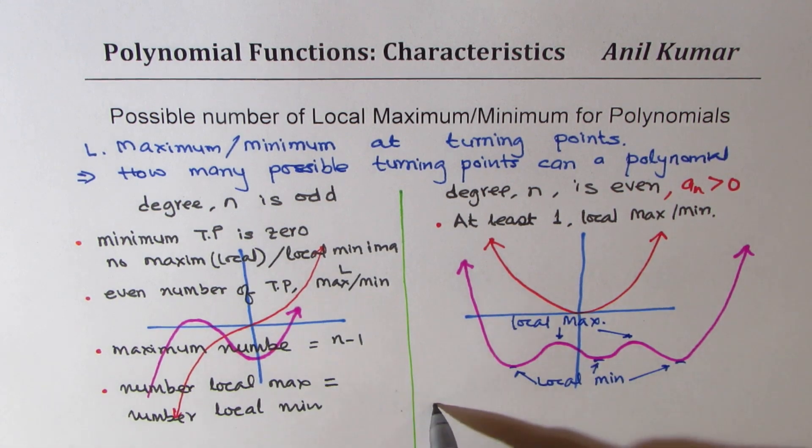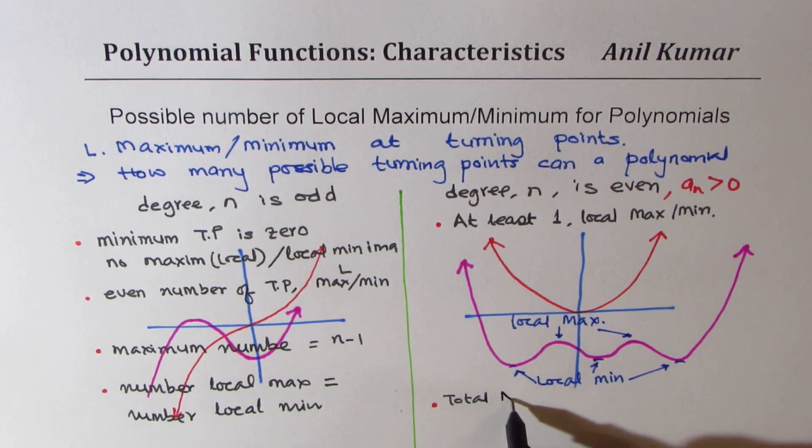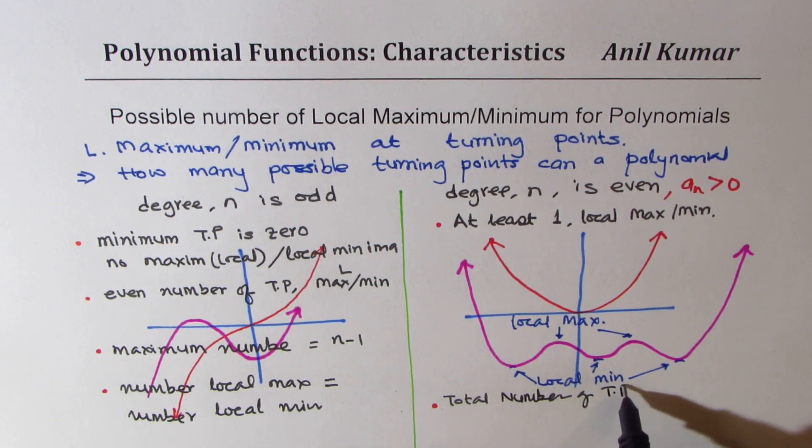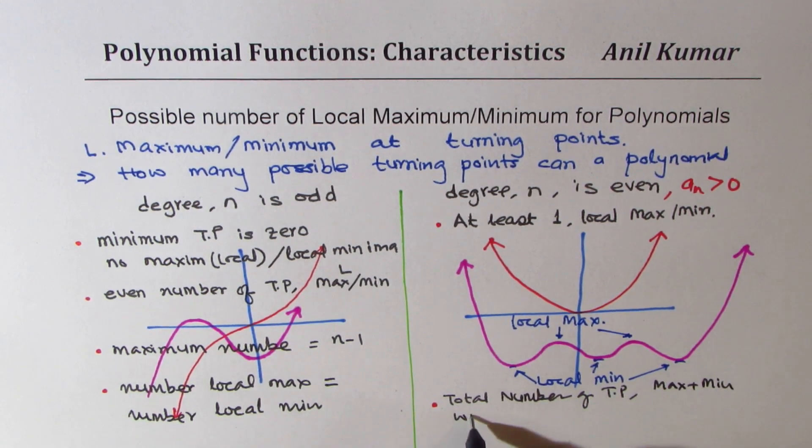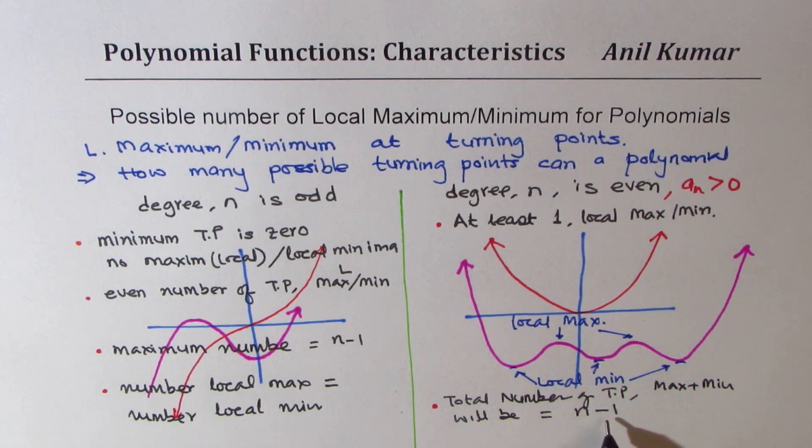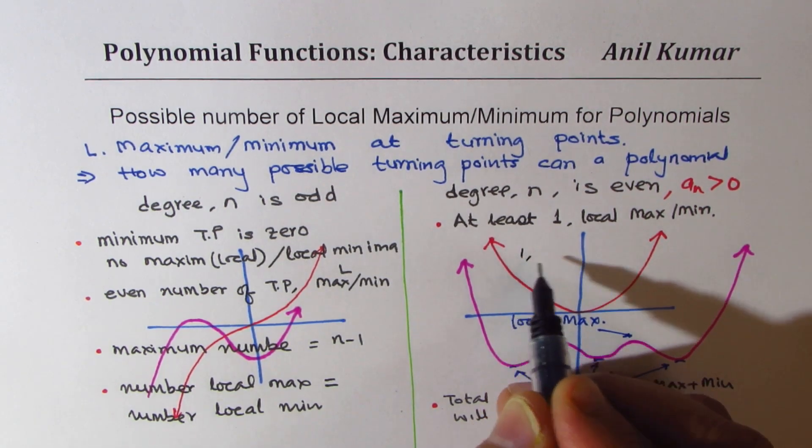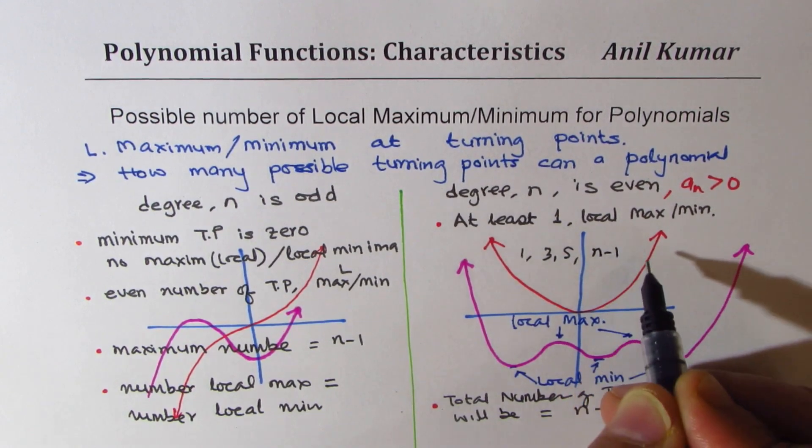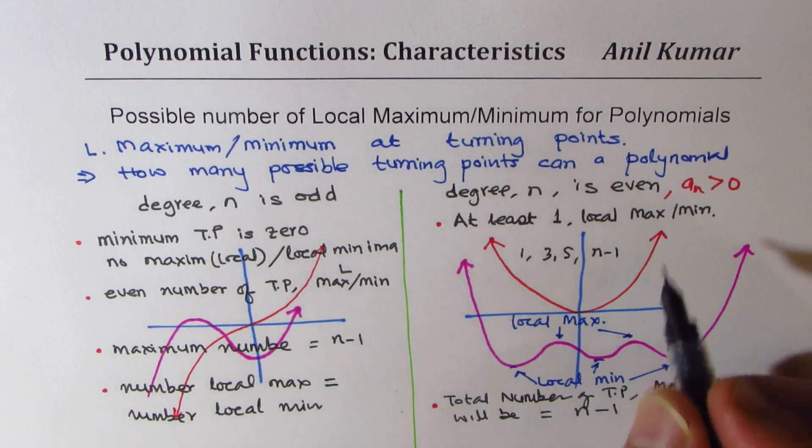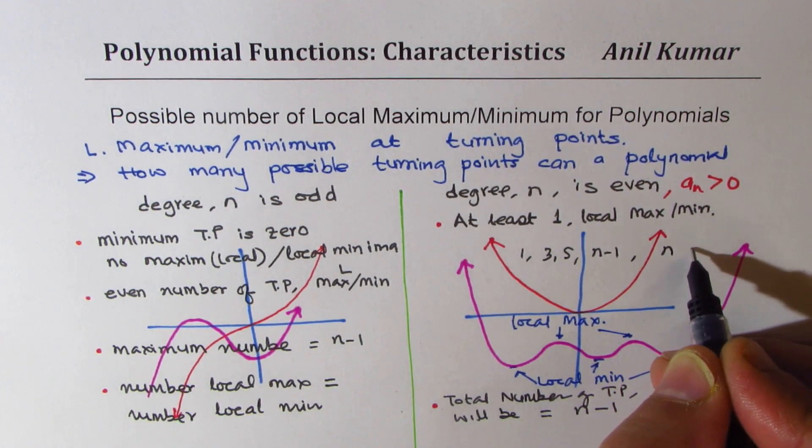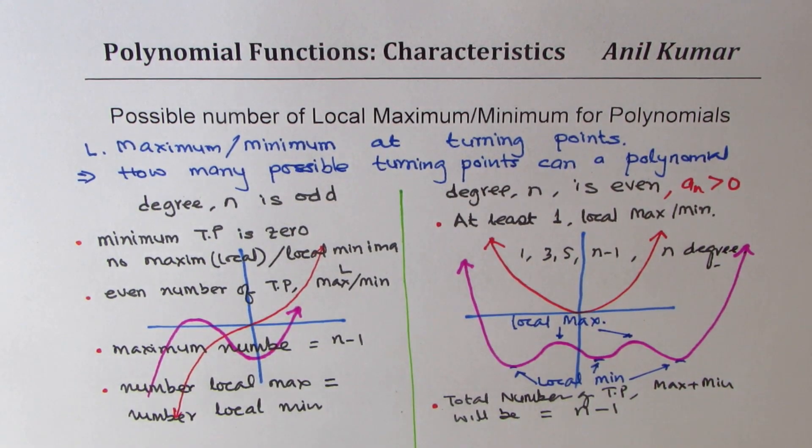Here also, you will notice one thing, that total number of turning points and also maximum plus minimums will be equal to n minus one. It will be an odd number. It will be an odd number, n minus one. So at least it will have one local maximum minimum, or it could have one, three, five, up to n minus one. So that becomes kind of series where n is degree of polynomial, as you can see here.